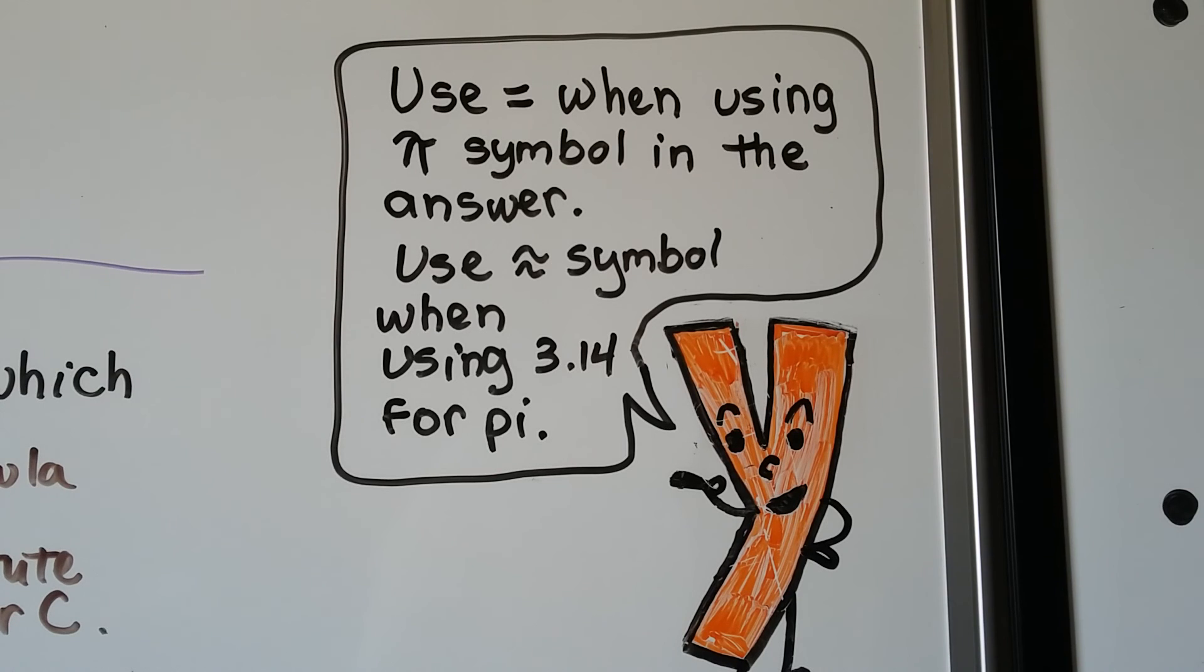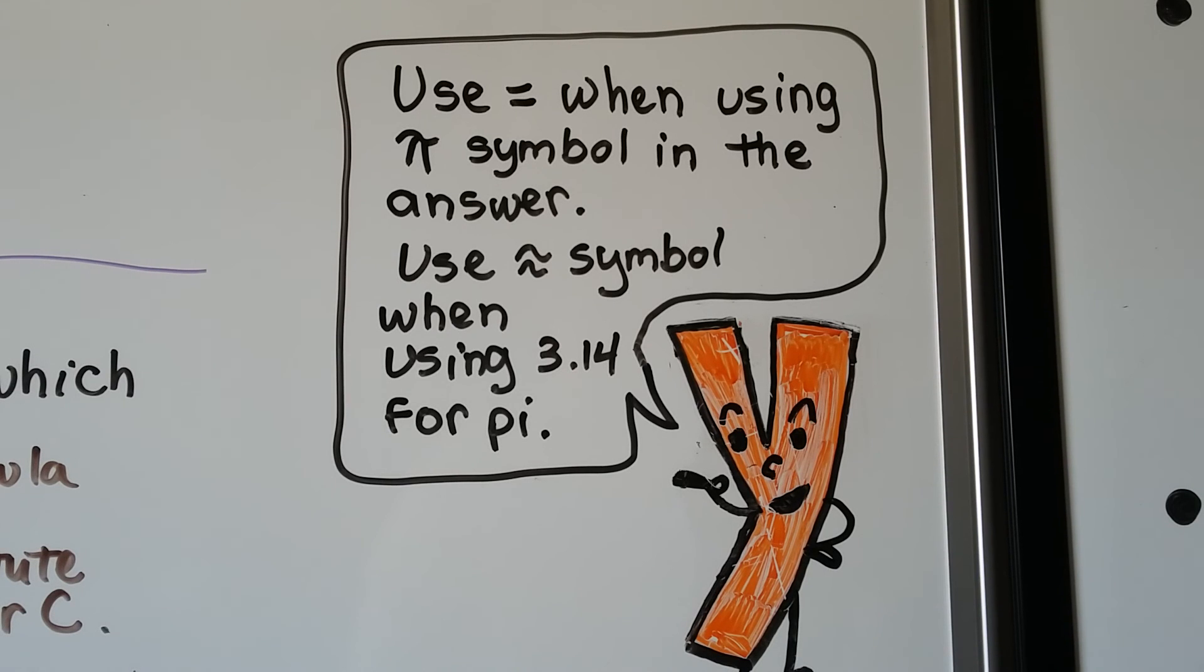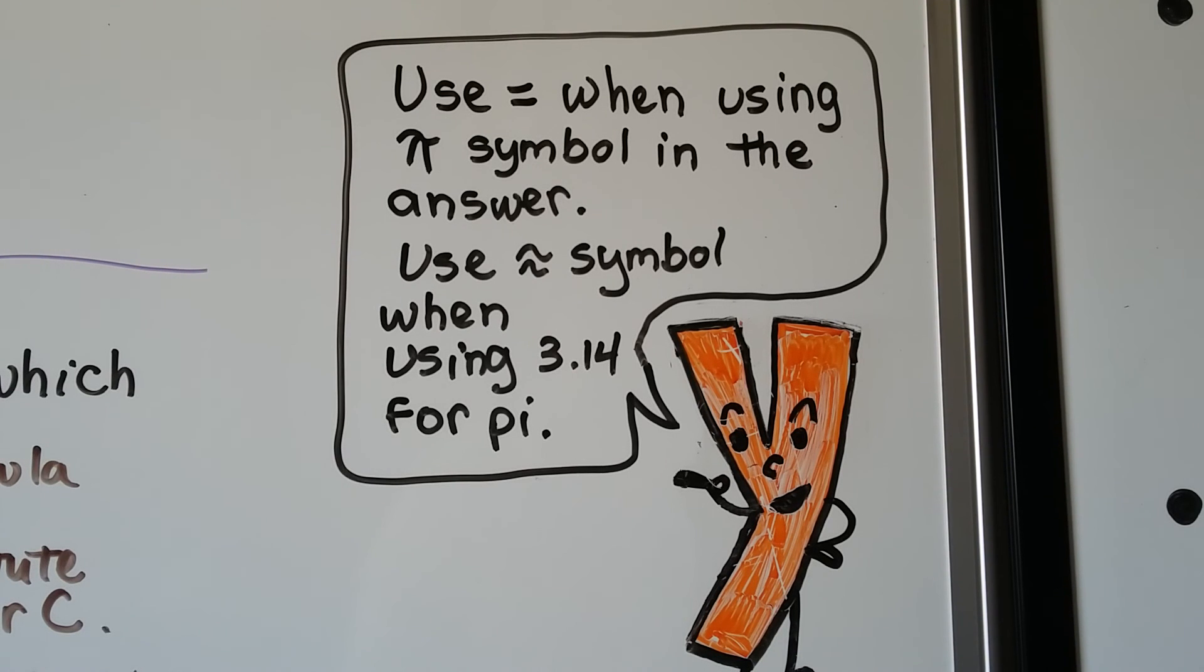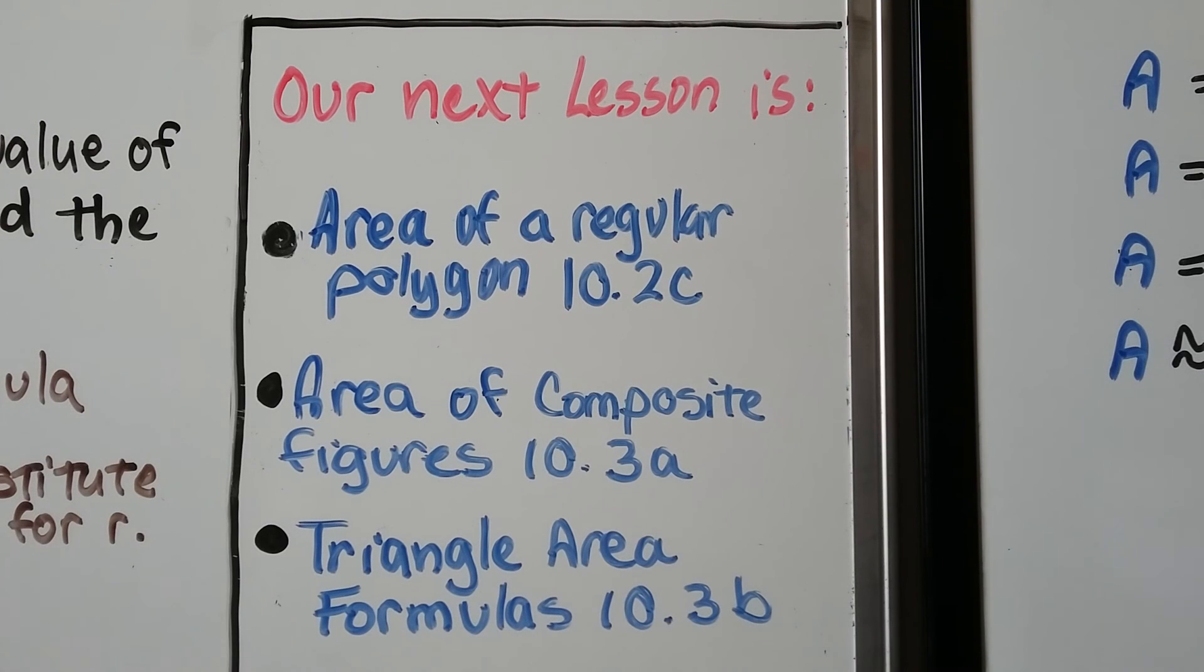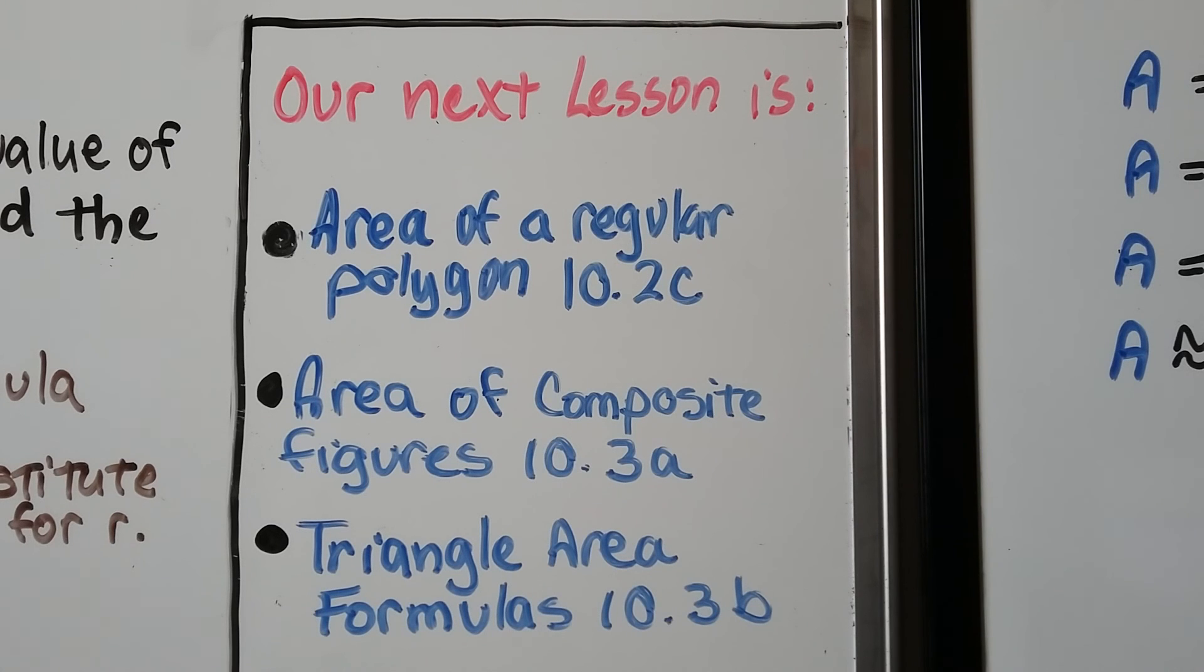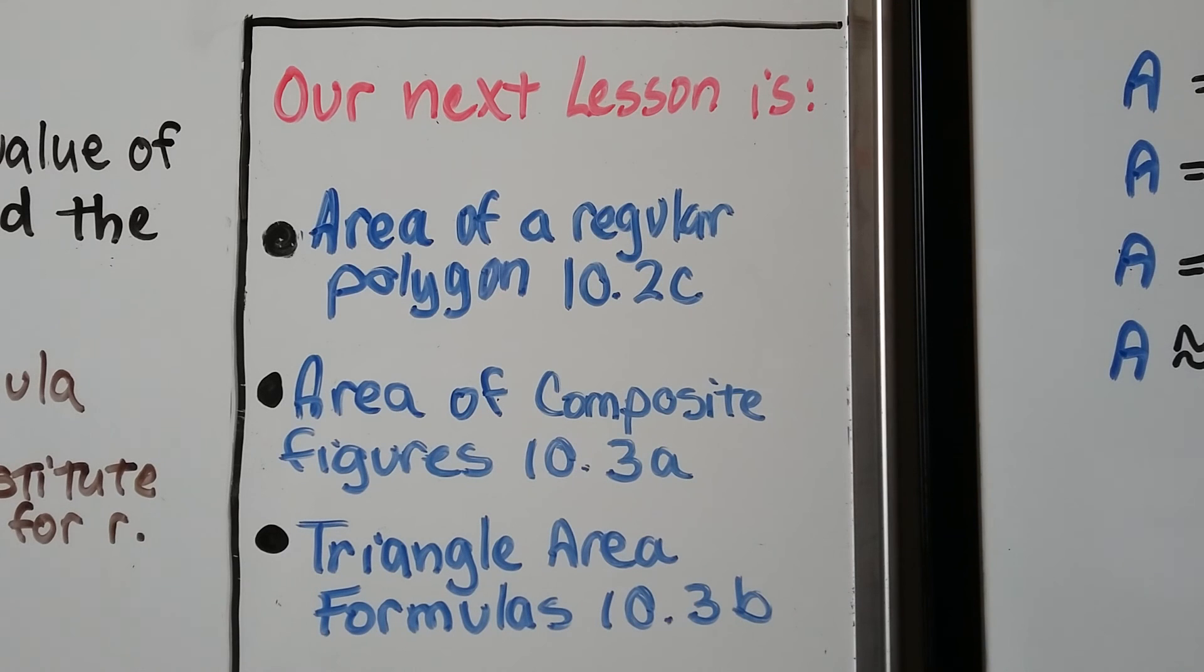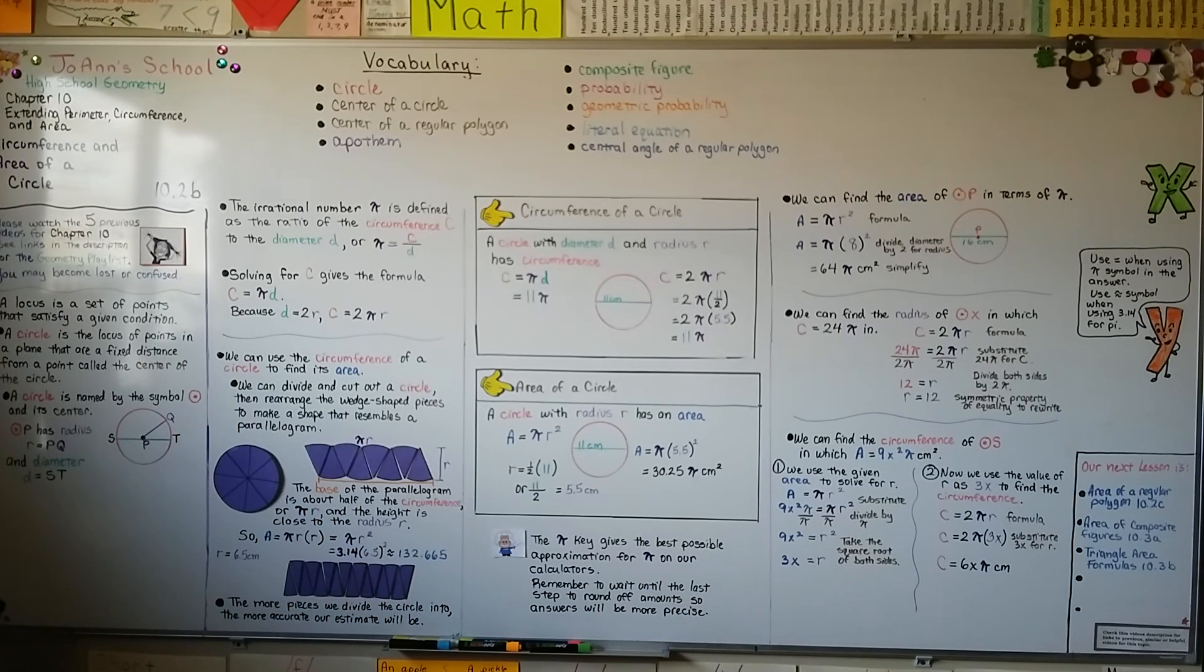Remember to use an equal sign when the pi symbol is in the answer, and use an approximation symbol when using 3.14 as a substitute for pi. Our next lesson is the last part of 10.2. We're going to talk about the area of a polygon. After that, we'll move into 10.3 and talk about the area of composite figures and the triangle area formula. Now you should be able to figure out the circumference and area of a circle, and this is the end of part 2 of this lesson. I hope I'll see you for part 3. Have a great day.